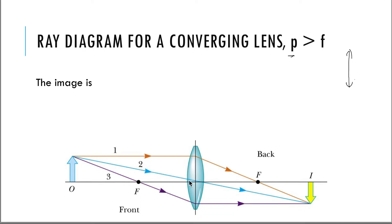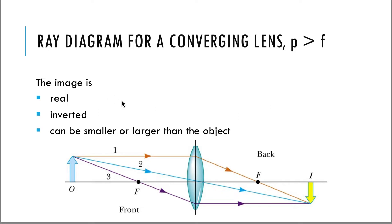Ray number two goes straight through the center and continues straight. Ray number three goes through the focal point on the near side — as soon as it hits that lens, it's going to emerge parallel. Looking at where these rays intersect and form the image, you can see it's upside down or inverted, it's smaller than the object, and the rays actually intersected at this point, which means a real image was formed. Sometimes the image will be smaller, sometimes larger — that depends on the exact position of the object.